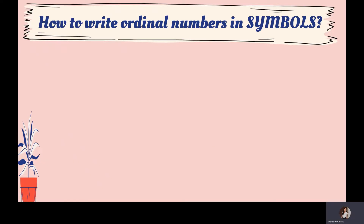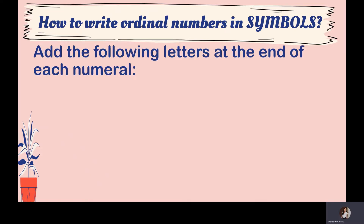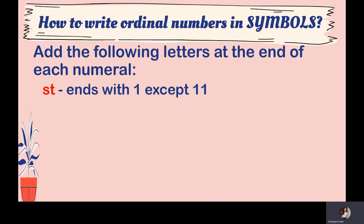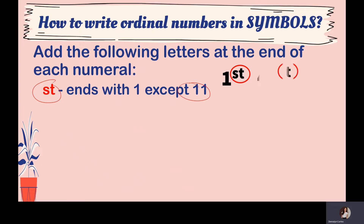How do we write ordinal numbers in symbols? First, you have to add the following letters at the end of each numeral. We add ST if a number ends with 1, except 11. For example, 1ST (first) and 41ST.